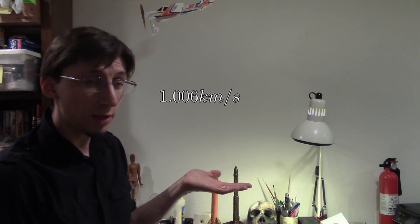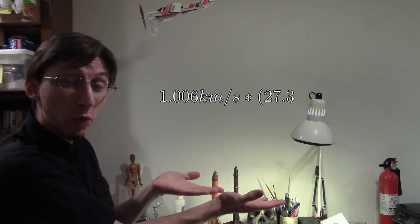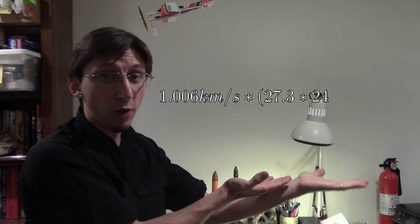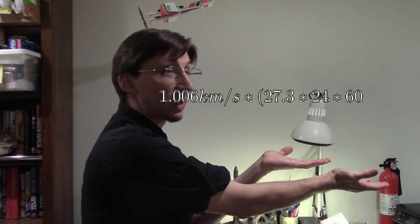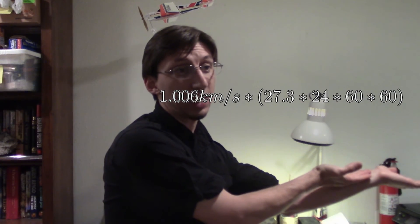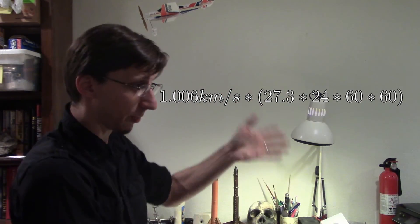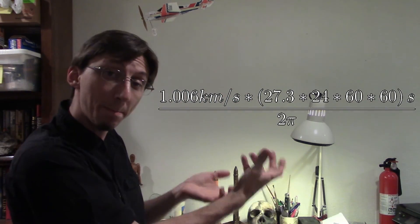We have that 1.006 kilometers per second times the 27.3 days it takes for the Moon to go around the Earth, times the 24 hours in a day, times 60 minutes in an hour, times 60 seconds in a minute. This all adds up to a big number. Then we take all of this and divide it again by 2π.